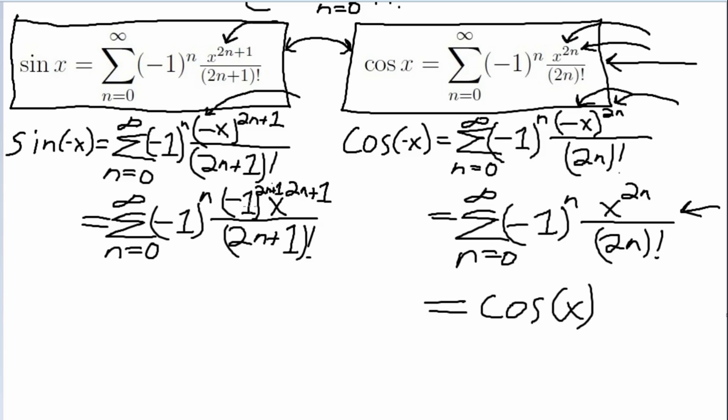But if we think about it, negative 1 to the 2n plus 1 is just the same thing as negative 1. So we can just leave off that exponent there, which is nice, because now this term no longer depends on n. In other words, we can pull it out in front of our summation symbol and write everything else the same as it was before.